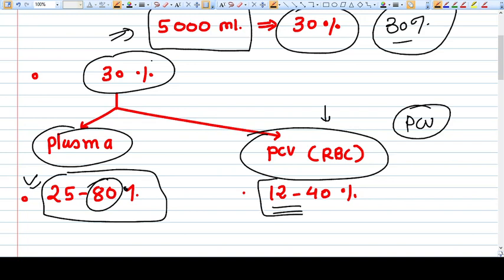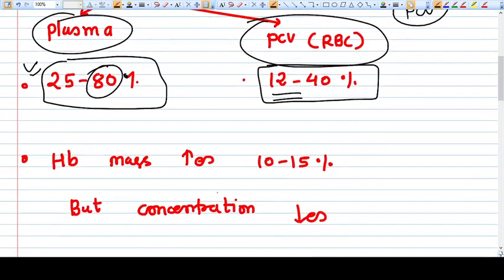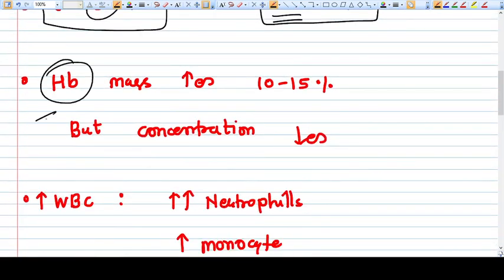Now hemoglobin, overall hemoglobin increases by 10 to 15 percent. Still concentration decreases because of increase in plasma.